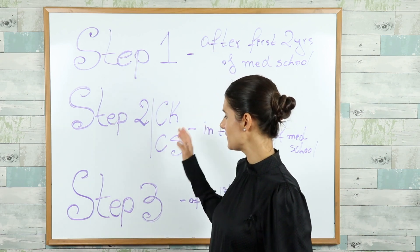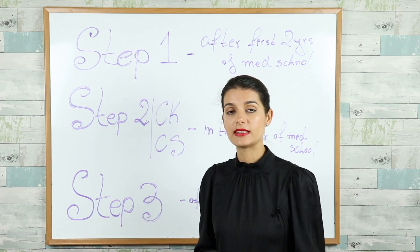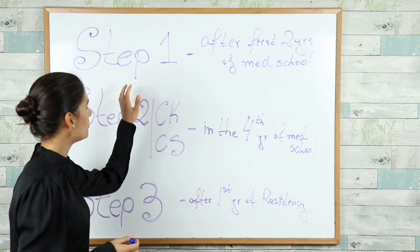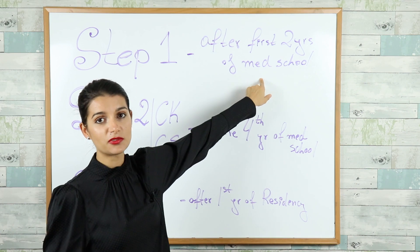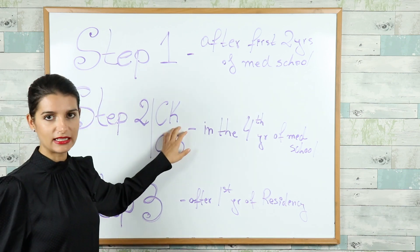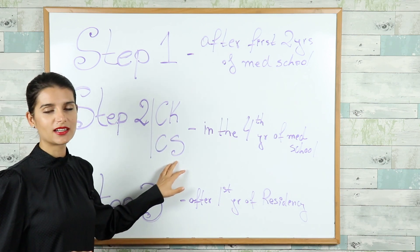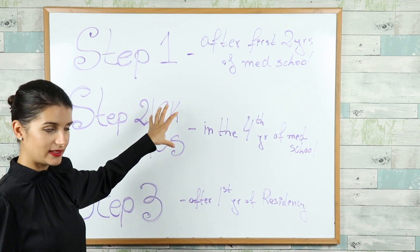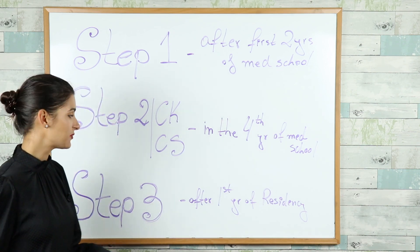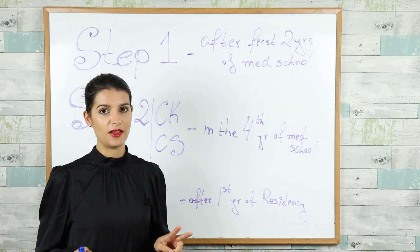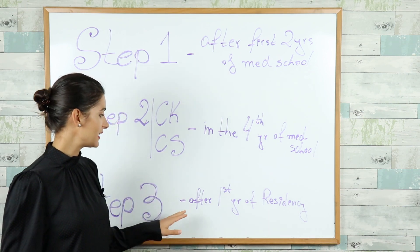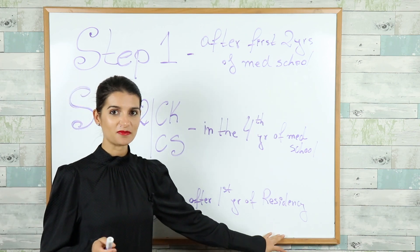Let me go over the step exams quickly — what they test and when people in the US normally take them. Step 1 is taken after the first two years of medical school, covering basic sciences. Step 2 has two parts: CK (Clinical Knowledge), a computerized test, and CS (Clinical Skills), a practical exam — both taken in the fourth year of medical school. Step 3 is a two-day computerized exam with MCQs and clinical cases, normally taken after the first year of residency because it is very clinically oriented.